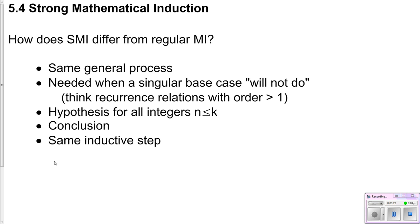The other difference is because we're going to be dealing with relations that have multiple steps involved, we need to show a hypothesis for all integers n less than or equal to k instead of just saying this is true for P(k). We will prove it true for P(k+1). So the process of showing it's true for P(k+1) is still the same. Of course, that's your conclusion. And then the inductive step process is the same from there.